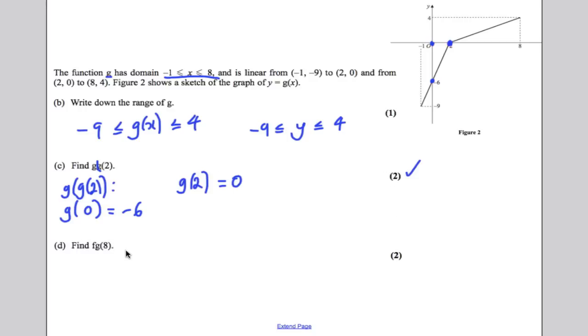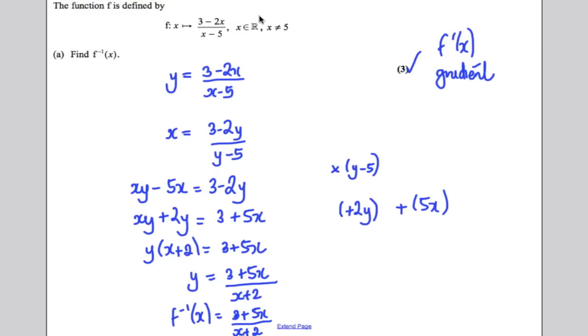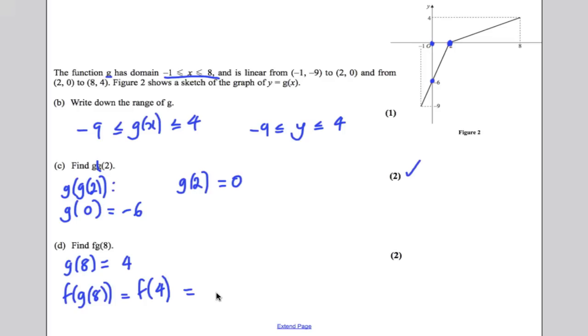Find f of g of 8. Well, the first thing is to work out g of 8. Looking at the graph, when you put 8 in, you get 4 out. So g of 8 is 4. So f of g of 8 is therefore f of 4. And it's the answer you get when you put 4 into this function here. Now, when you put 4 into that function there, you get negative 5 over negative 1, which is 5. And it's as simple as that.